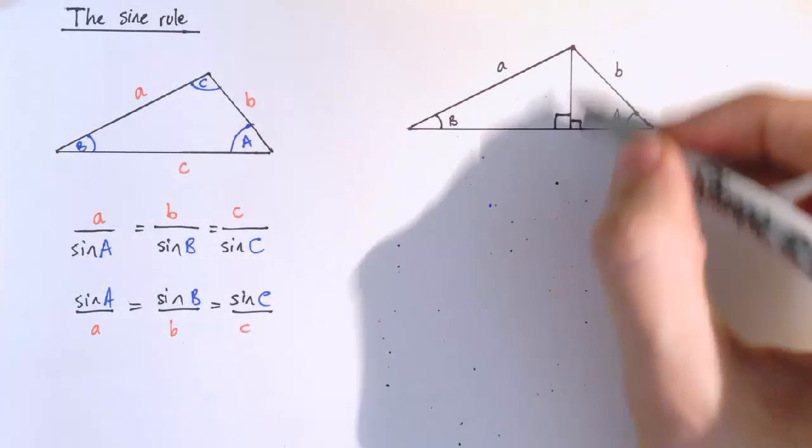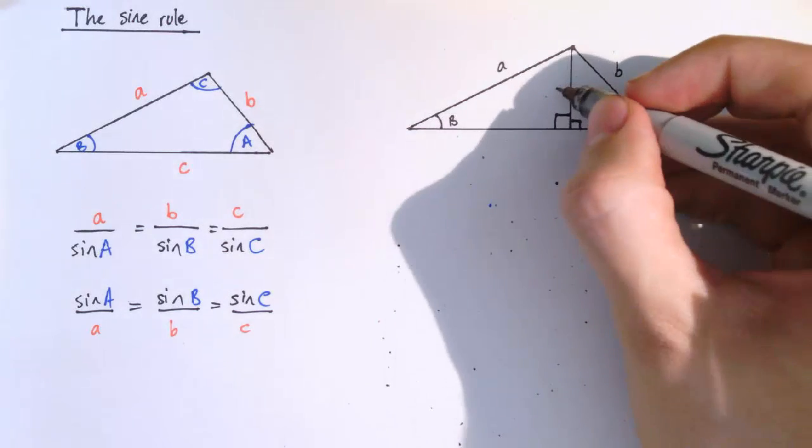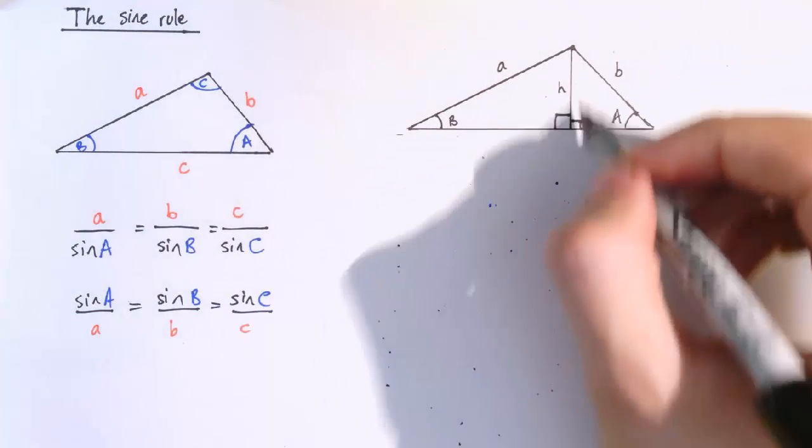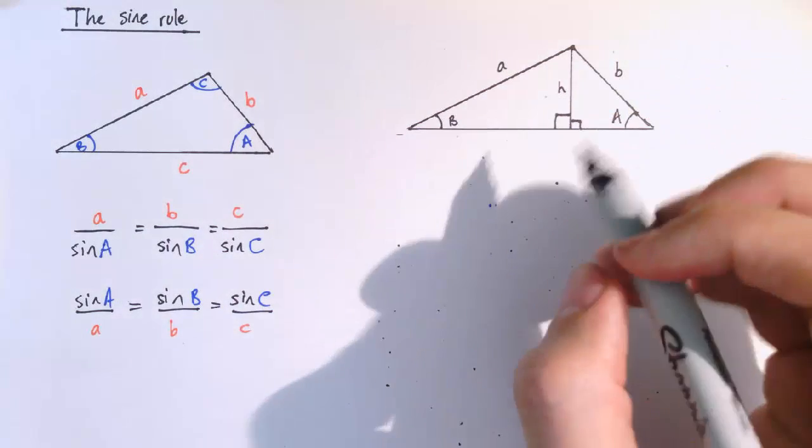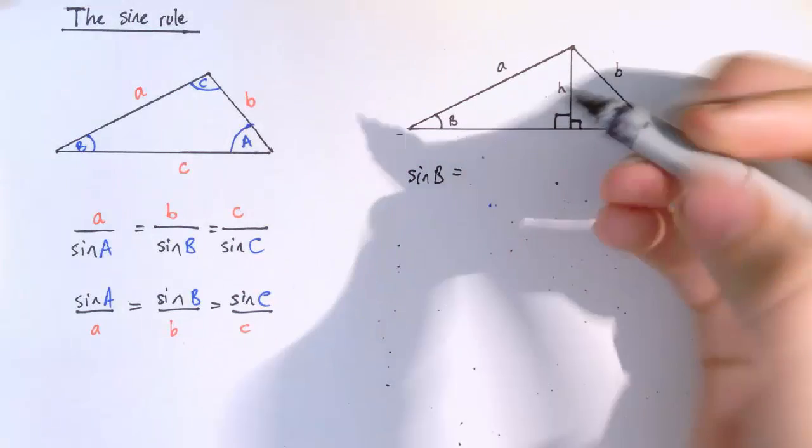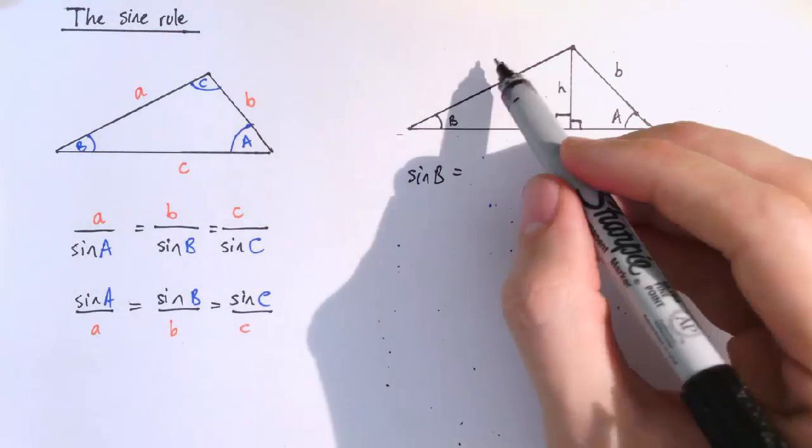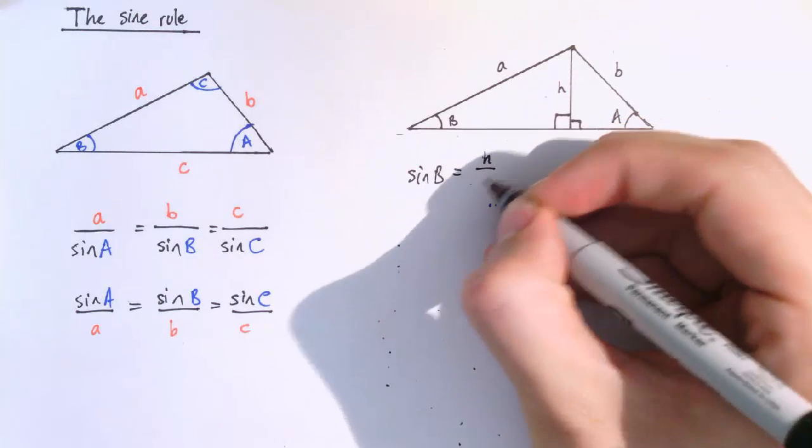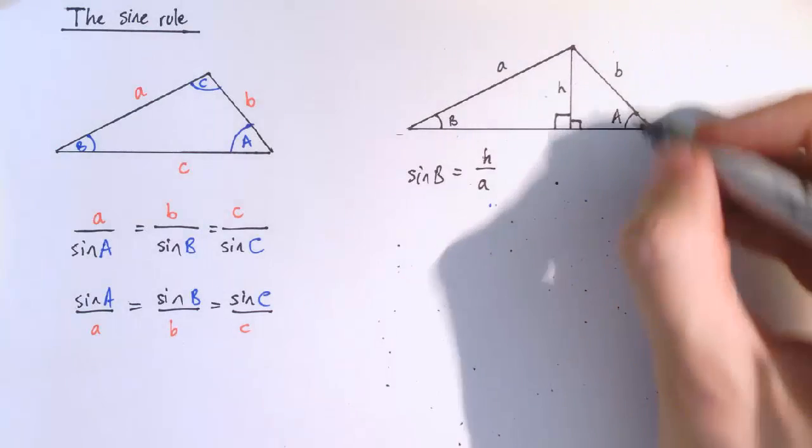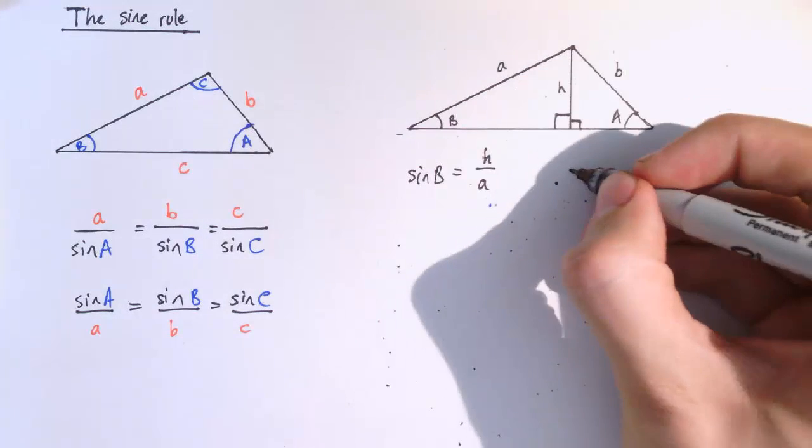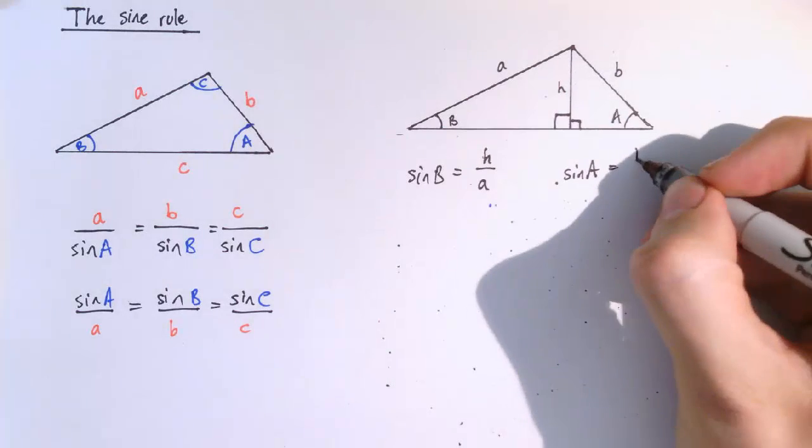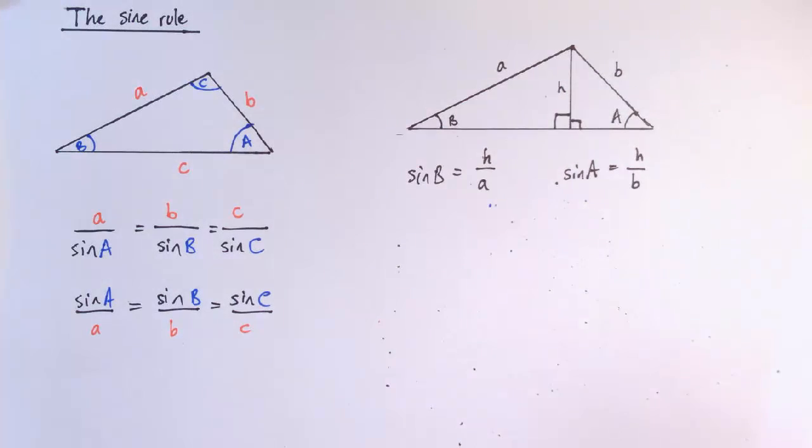And again, we're going to go by this perpendicular line here, the height. And looking at this triangle on the left, sine b is equal to the opposite side divided by the hypotenuse, which is equal to h over a by your basic trigonometry results. And in this triangle here, we've got that sine a is equal to the opposite divided by the hypotenuse, and that is equal to h over b.